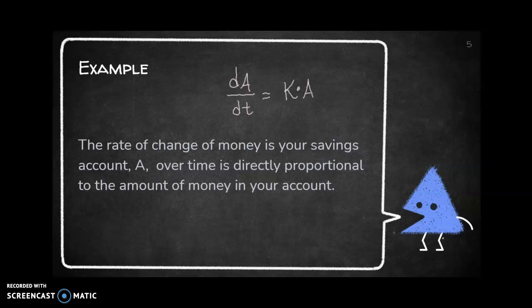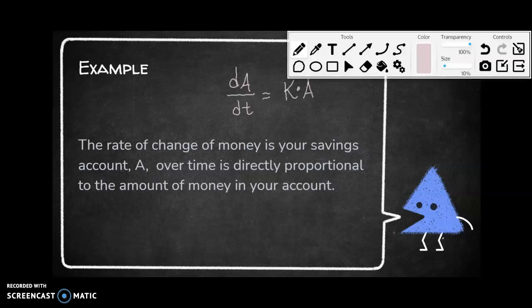Directly proportional means there's some constant times the amount, and inversely proportional means it would be some constant divided by the amount. That kind of means the richer you are, the more your savings account will grow.